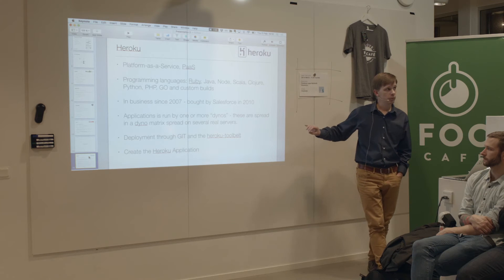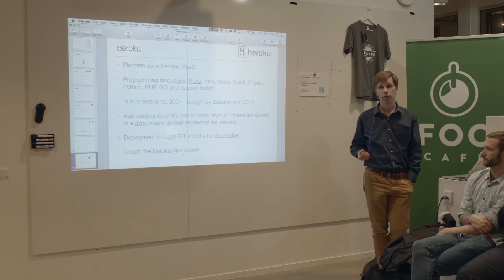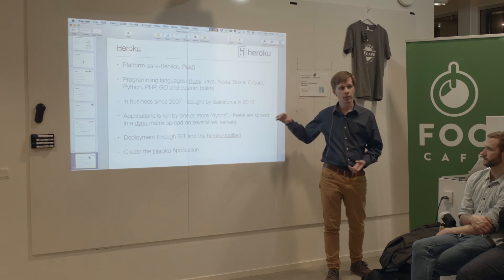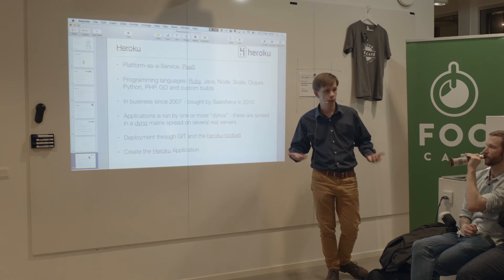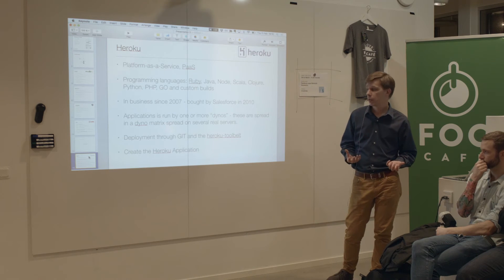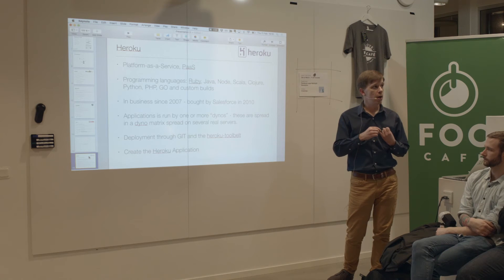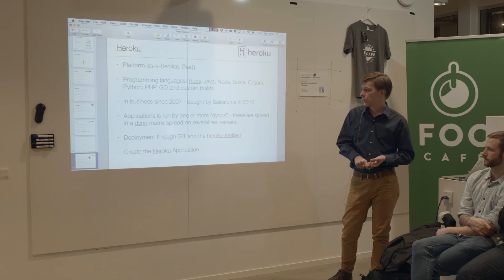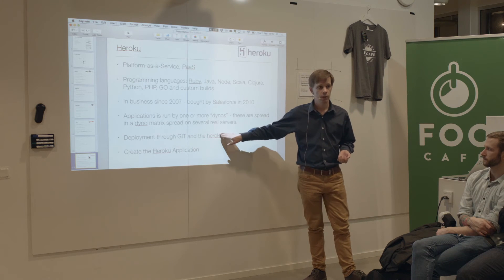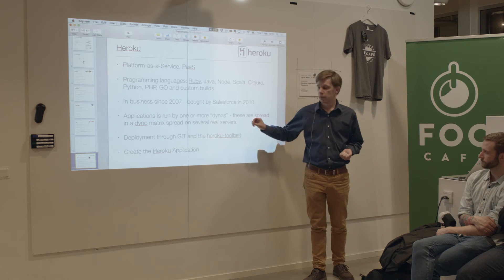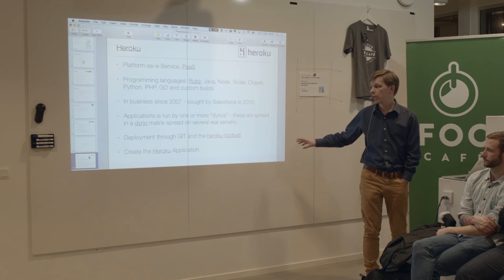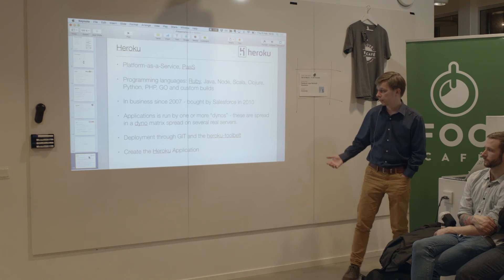Heroku uses what's called dynos. A dyno can be of different sizes — it's essentially a compute unit or container. It's not Docker, though you can get a Heroku Docker container. They don't use Docker containers for distributing the code — it's more like a shell where your application lives. They come in different sizes mostly in terms of available memory and CPU power. The really cool thing is that you deploy and do everything using Git and the Heroku toolbelt. That means you can build really awesome continuous integration solutions — super easy, because it's just standard tools.